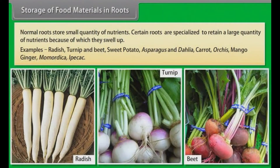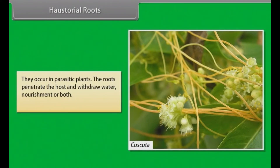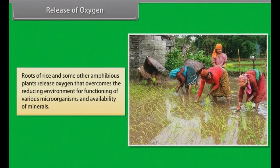Mechanical support and clinging: A number of climbers possess one or more adventitious roots for clinging to the support. Examples: betel, Tecoma, ivy. Haustorial roots: They occur in parasitic plants. The roots penetrate the host and withdraw water, nourishment or both. Examples: Cuscuta, Viscum. Release of oxygen: Roots of rice and some other amphibious plants release oxygen that overcomes the reducing environment for functioning of various microorganisms and availability of minerals.